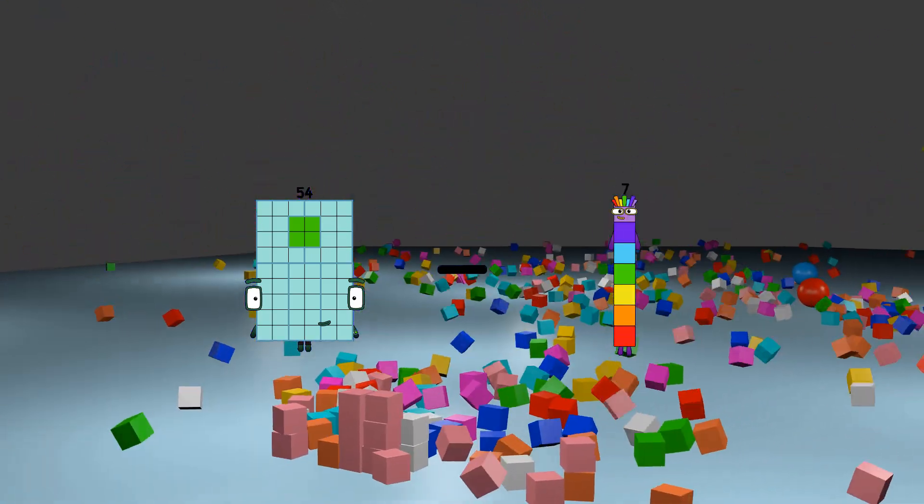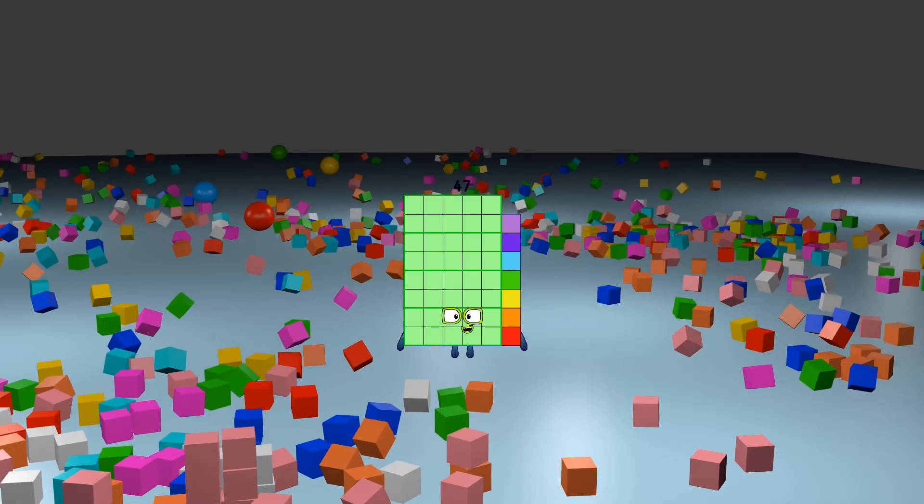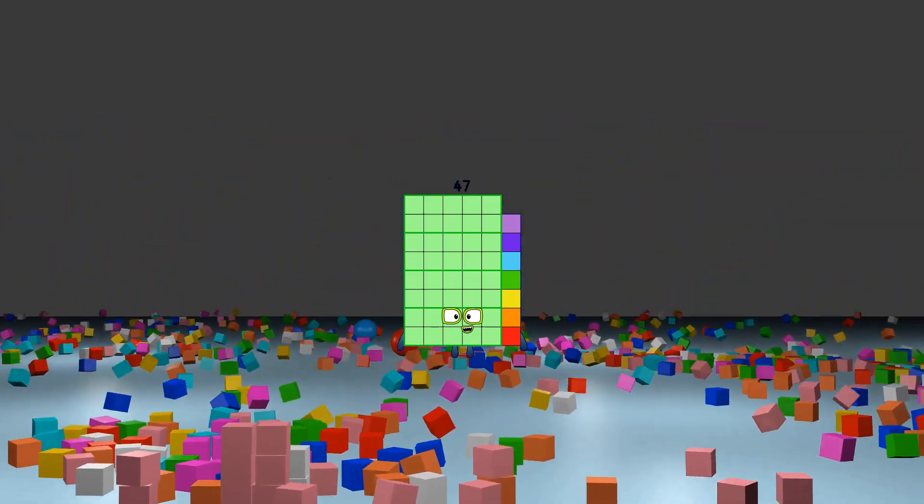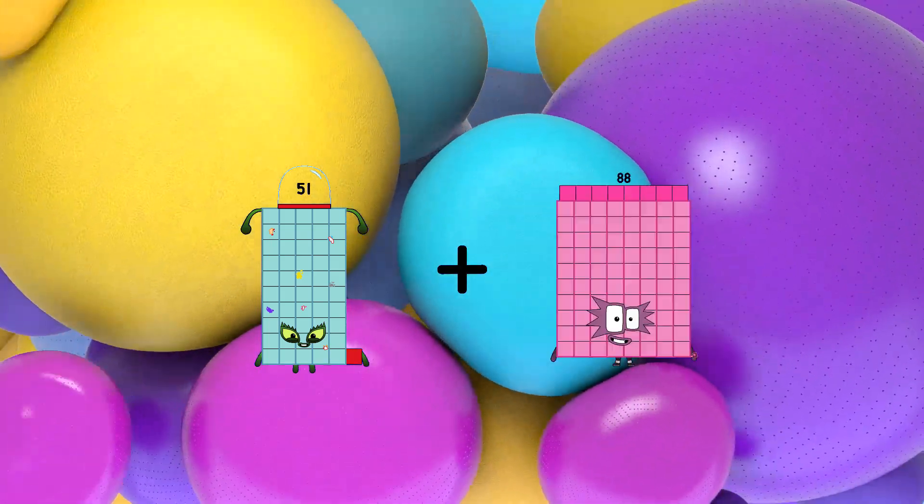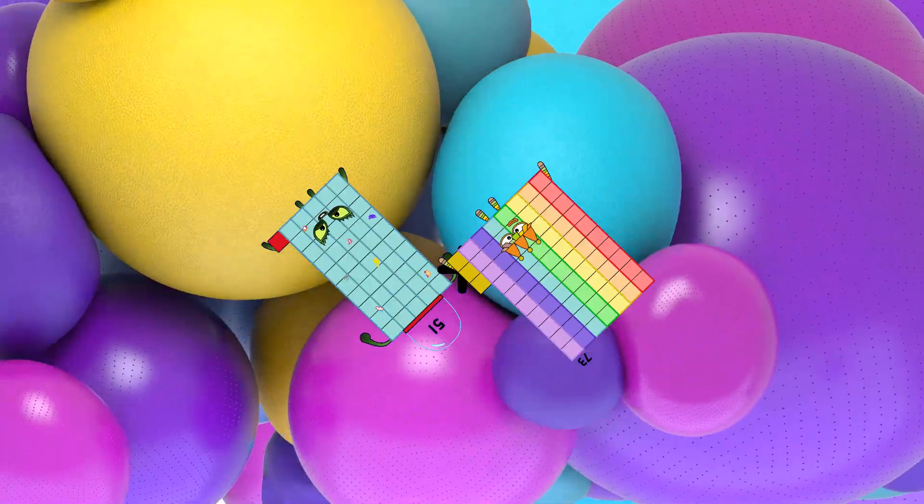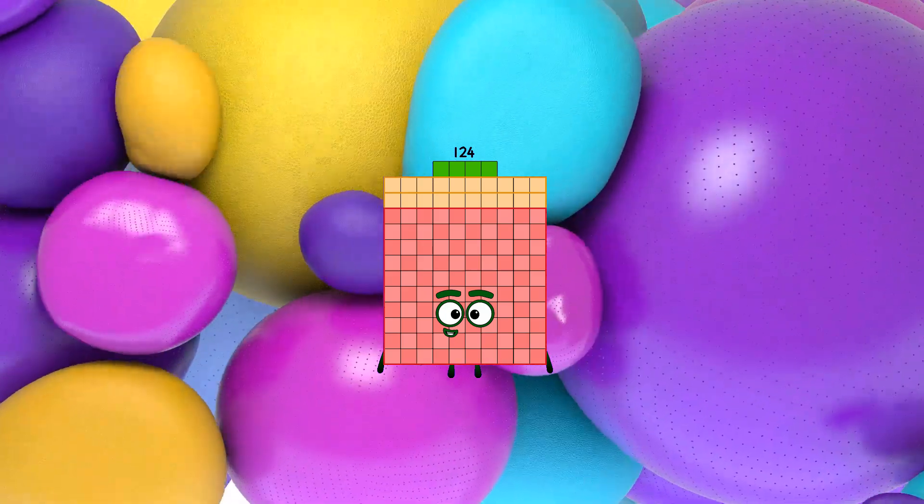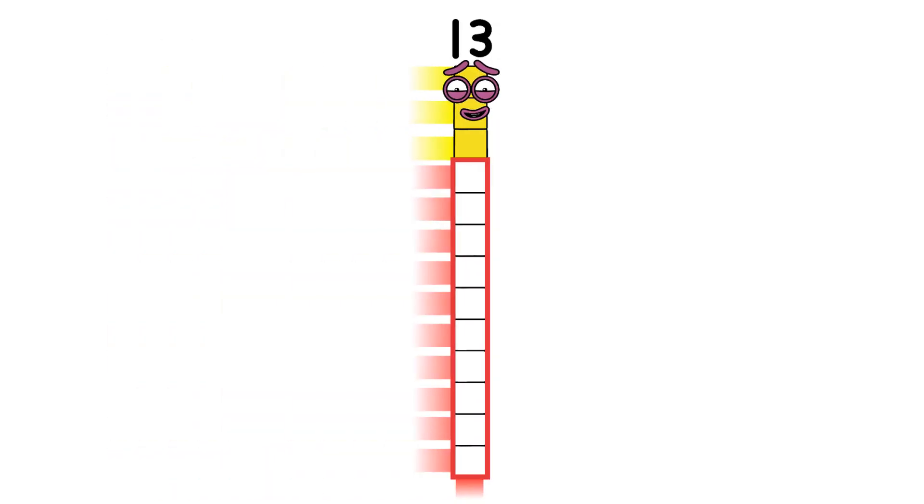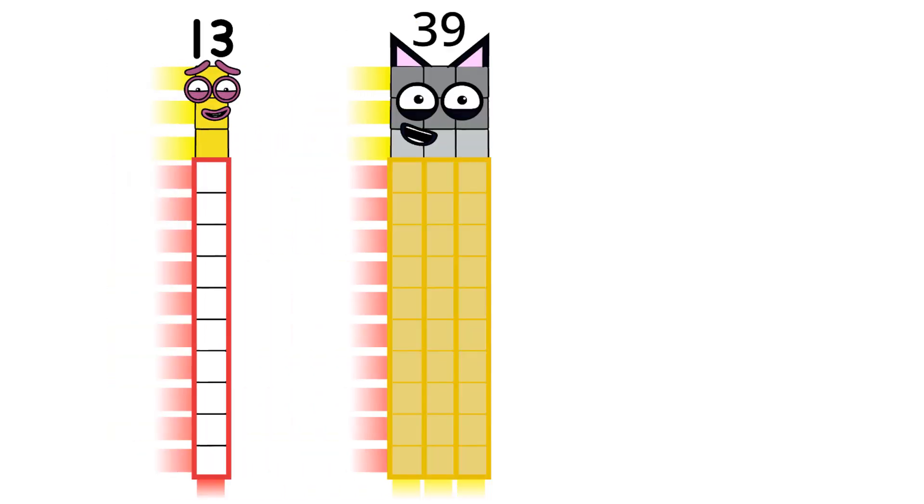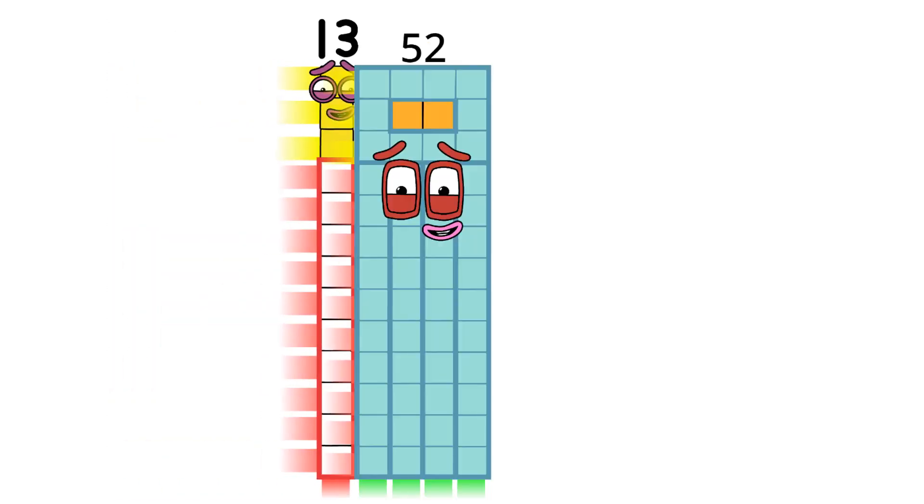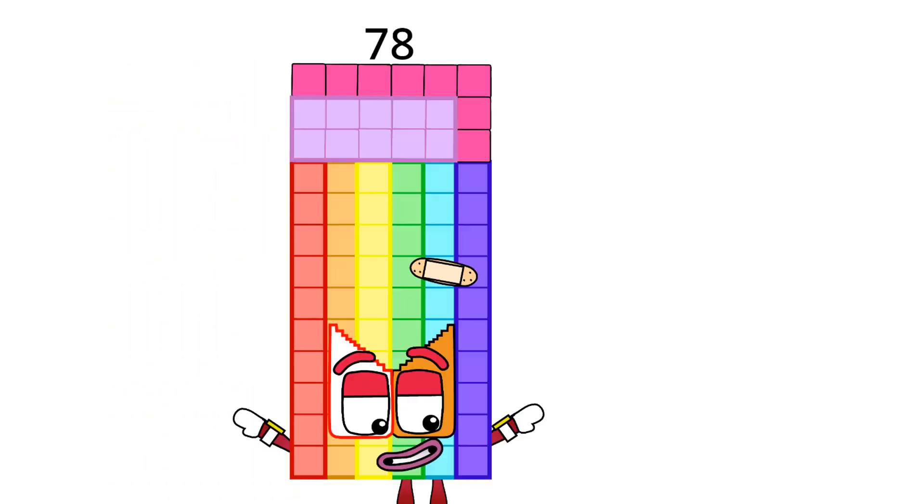54 minus 7 equals 47, 51 plus 73 equals 124. 13, 26, 39, 52, 65, 78.